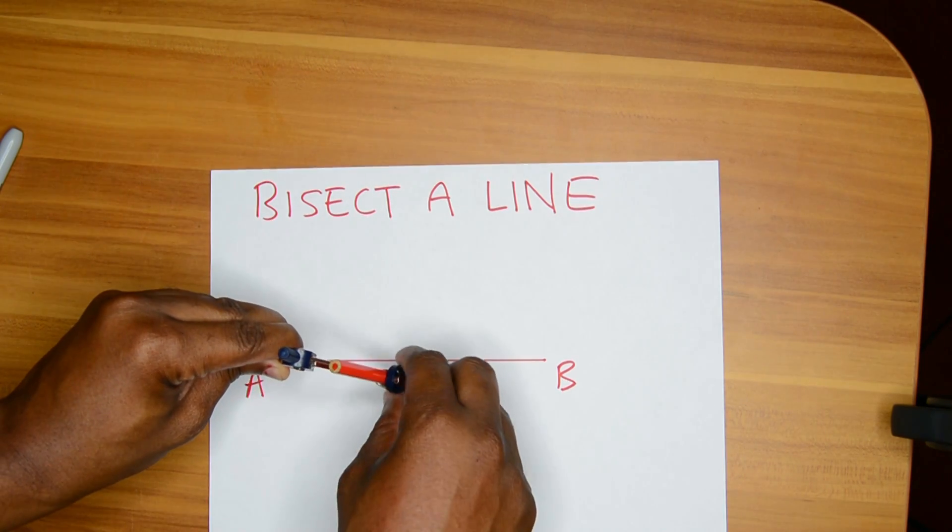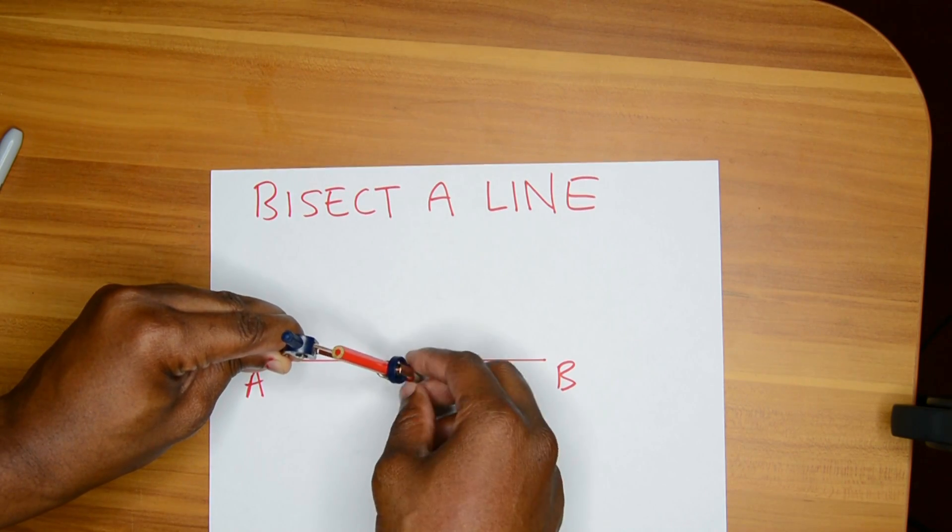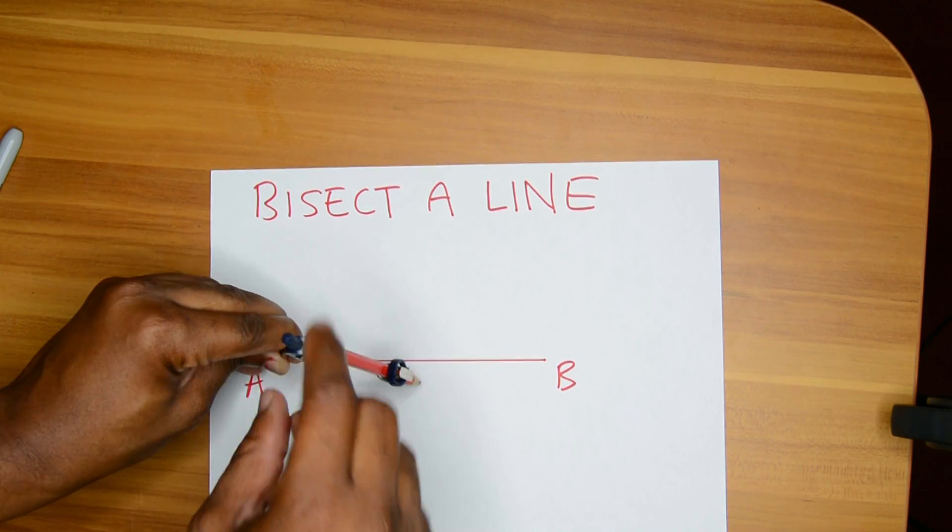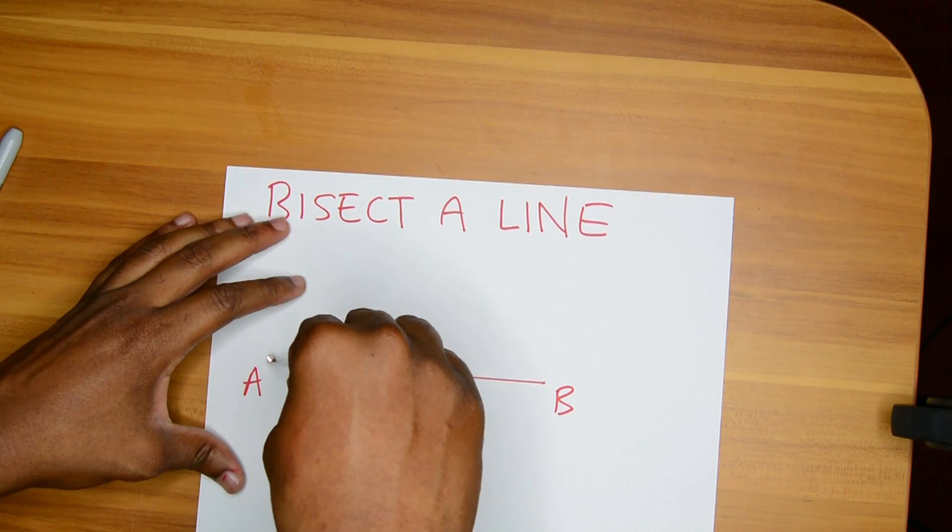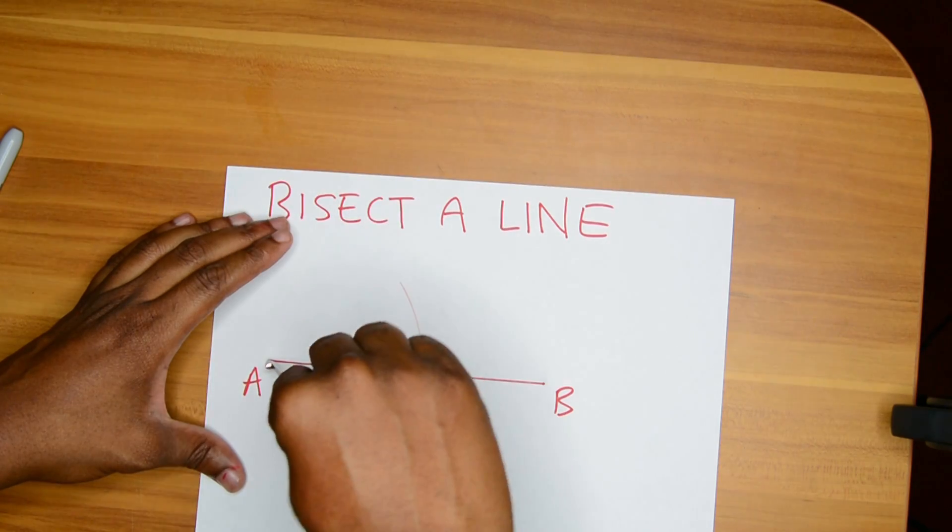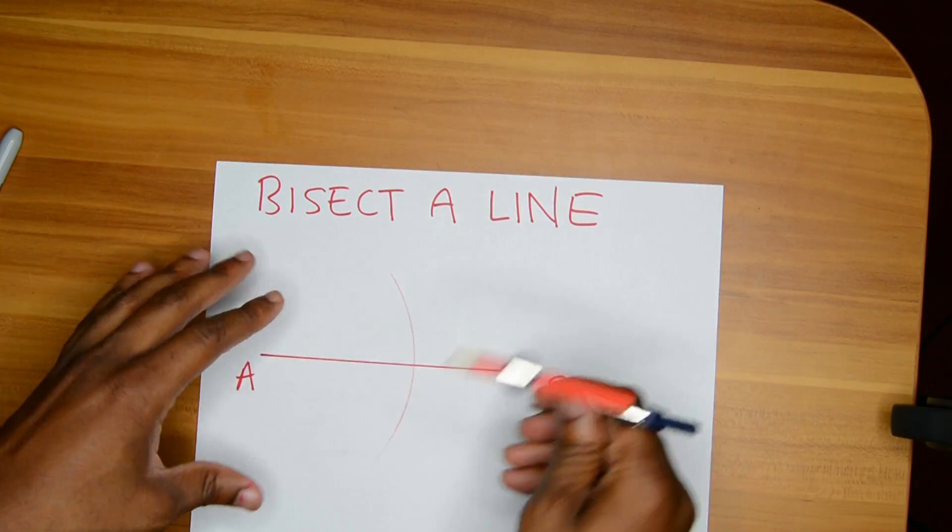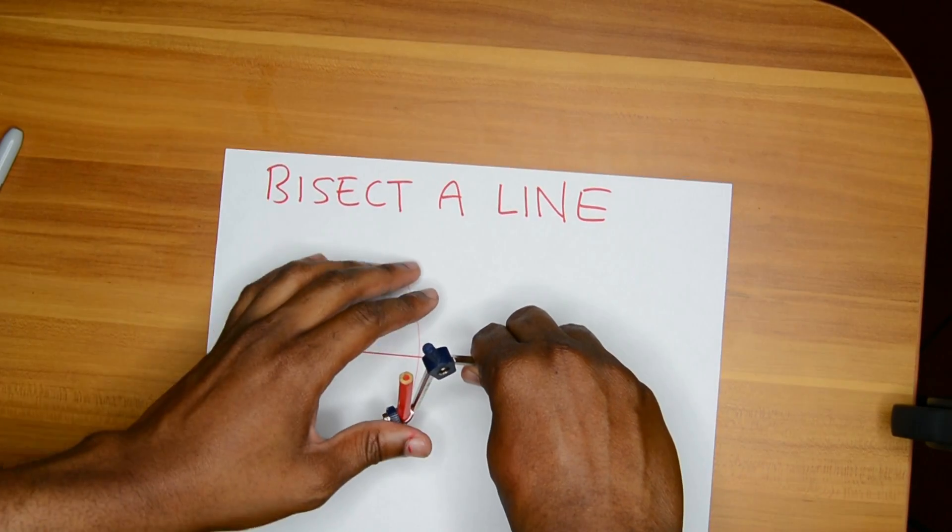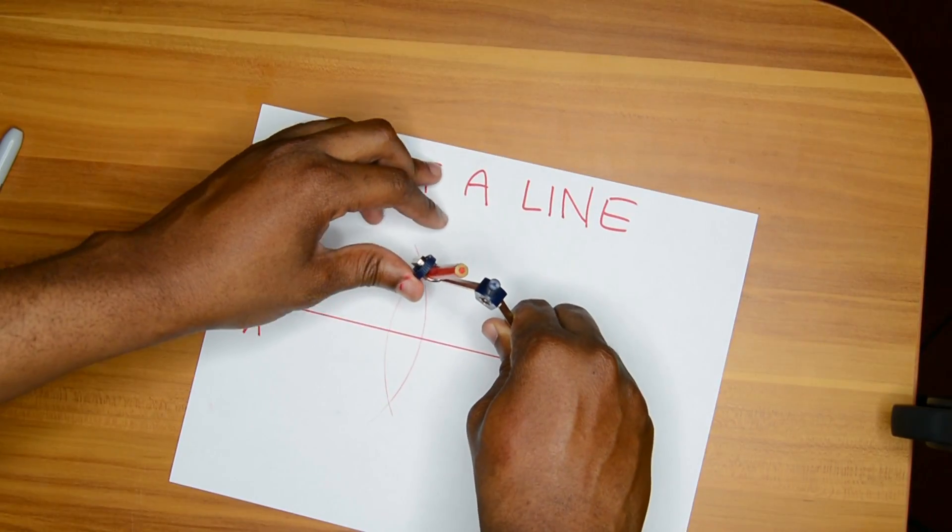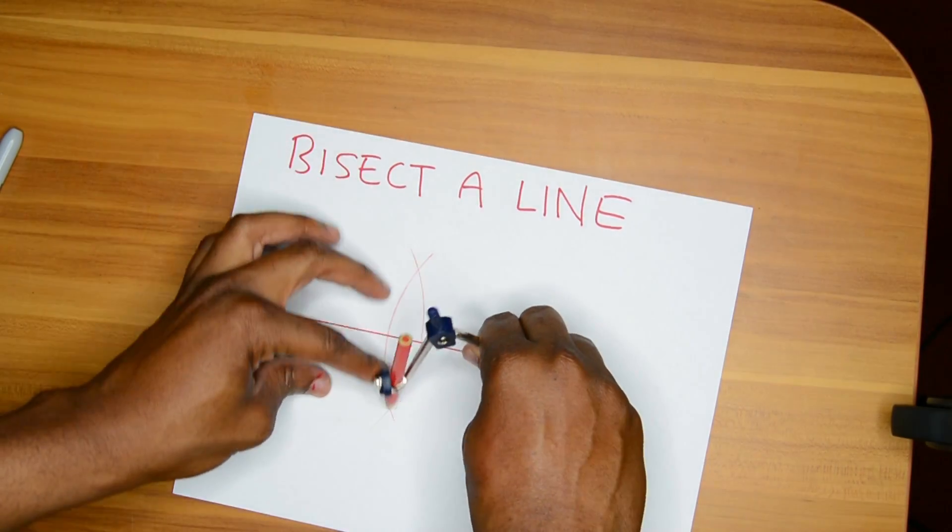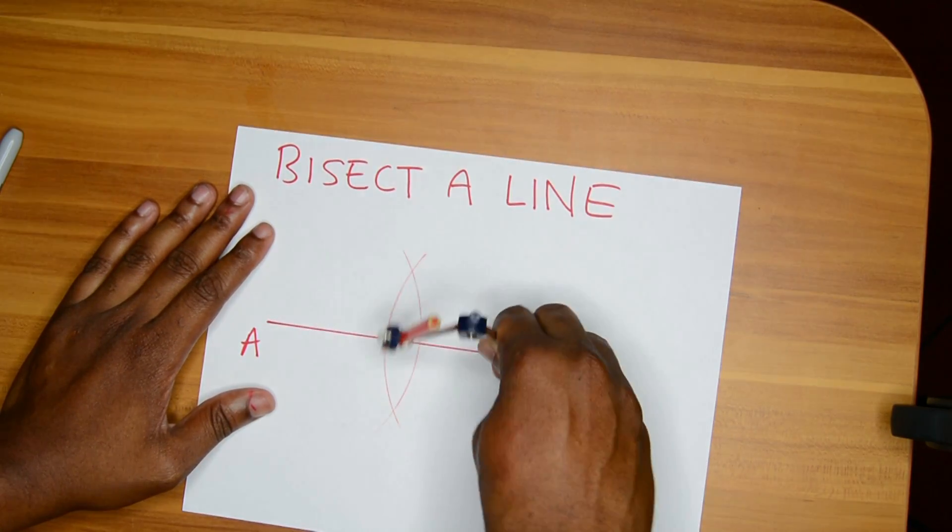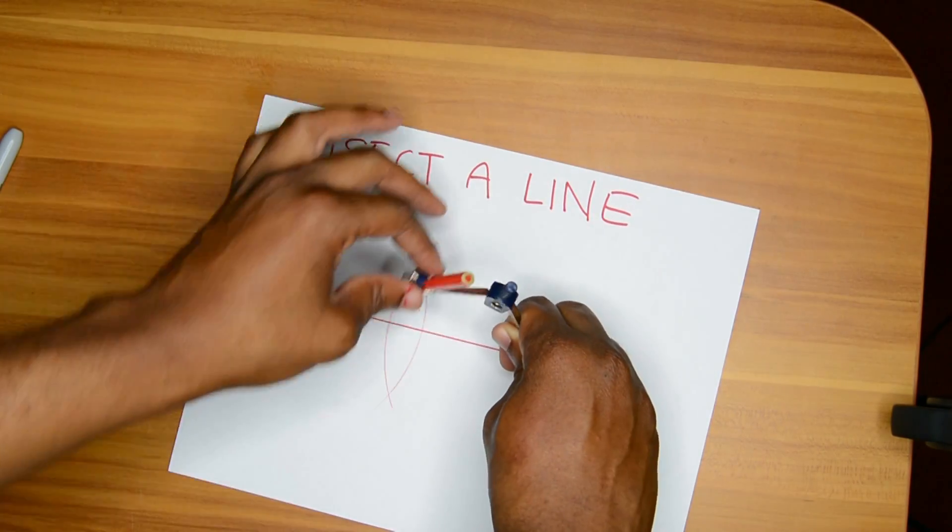Remember when using your compass, never to press on the side with the pencil or with the point that's drawing. Press on the side where the point is stabbing the paper. That's the part you want to press. Draw an arc. Next side. Repeat the process with the same size arc. Notice I'm keeping the weight on the point and allowing my hand to freely guide this part.